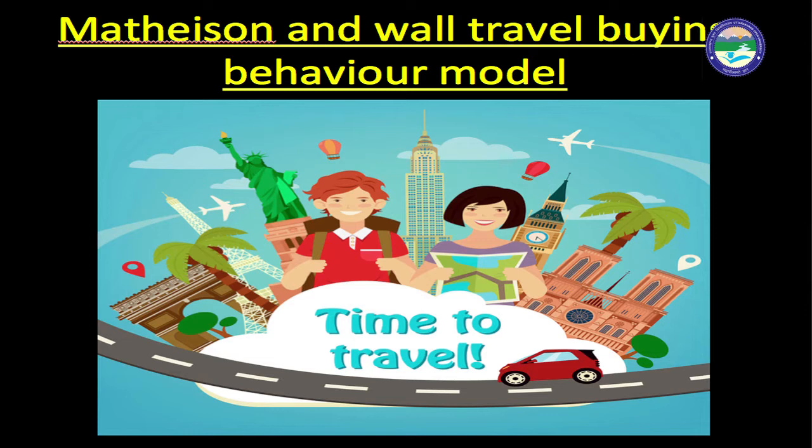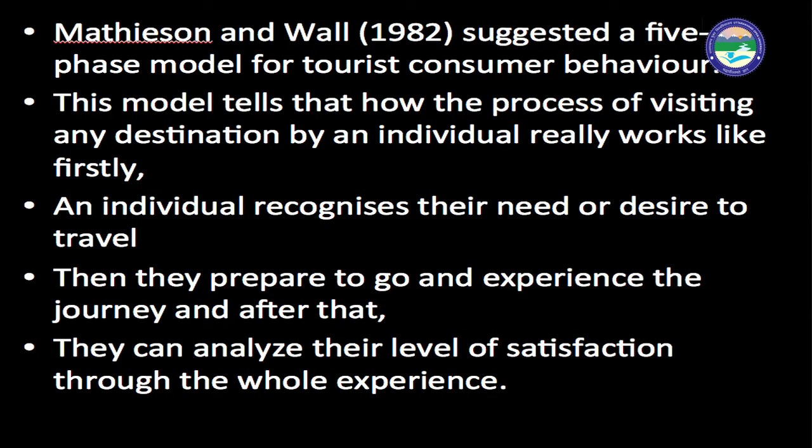The second model is Mathieson and Wall's travel buying behavior model. Mathieson and Wall suggested a five-phase model for tourist consumer behavior. This model explains how the process of visiting a destination by an individual works: first, an individual recognizes their need or desire to travel; then they prepare and experience the journey; and after that they analyze their level of satisfaction through the whole experience.